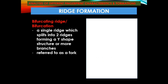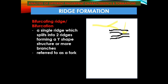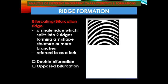Next is the bifurcation ridge, also known simply as bifurcation. It is a single ridge that splits into two ridges, forming a Y-shape structure, sometimes referred to as a fork. When it has three branches, it is known as trifurcation. Next is the double bifurcation.